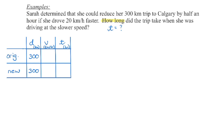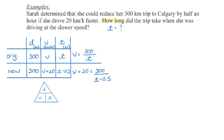Sarah is reducing her time by half an hour if she drives 20 kilometers per hour faster. We don't know the original time, but it's now going to take her half an hour less. Whatever the original time is, she's reducing that by half an hour. We also don't know the original speed, but she's going 20 kilometers per hour faster. So we represent the original speed with a variable and increase it by 20 to get the new speed.